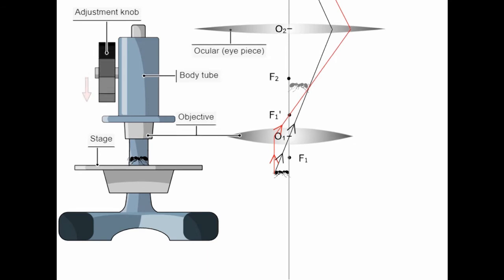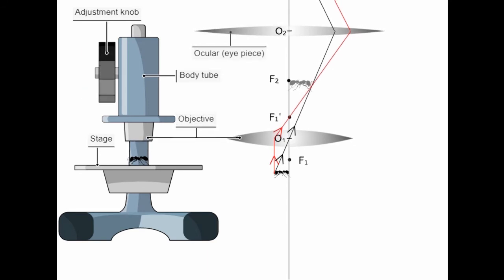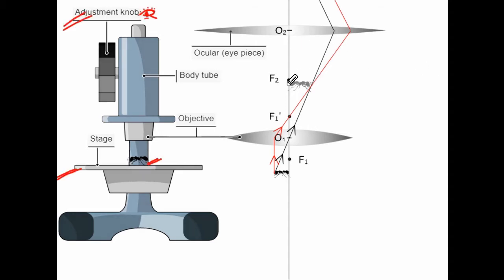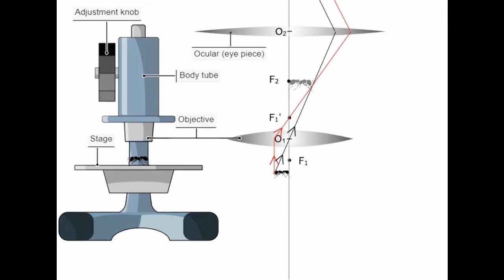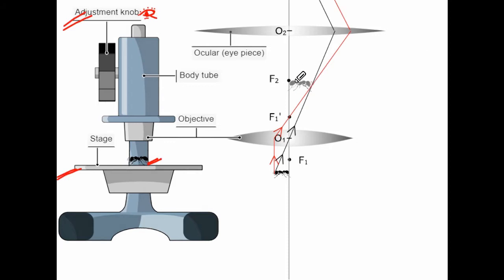With respect to the image, the lens positions are varying. Observe the position of the image and the position of the ant with respect to the lenses. When I rotate the knob, I am moving this image to this side.